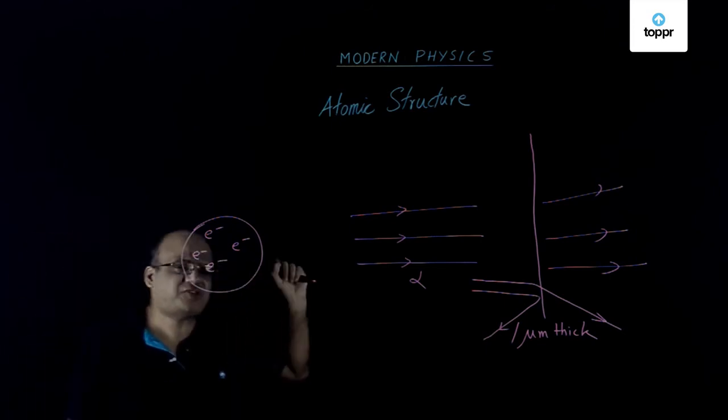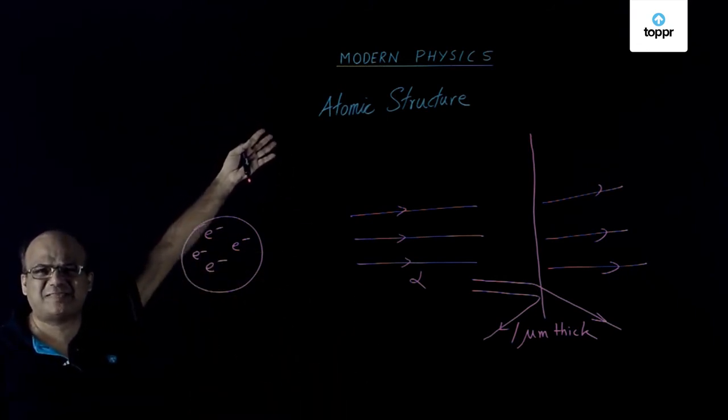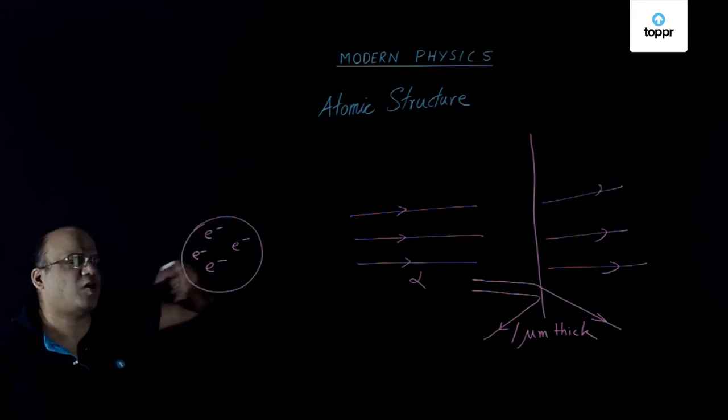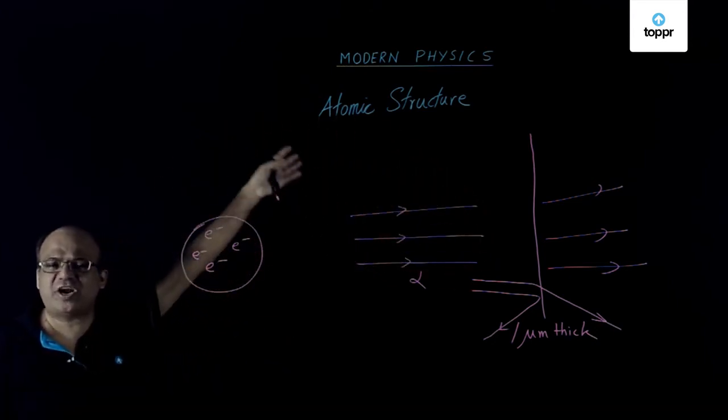So based on this Rutherford made some conclusions. First conclusion was that most of the atom is empty space. That's why most of the alpha particles are going straight through.